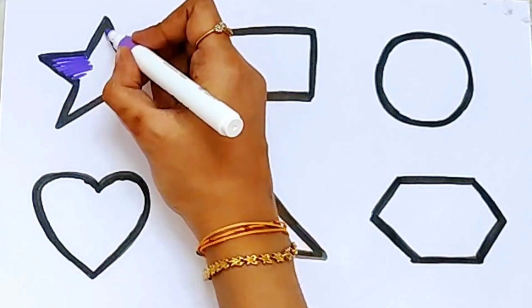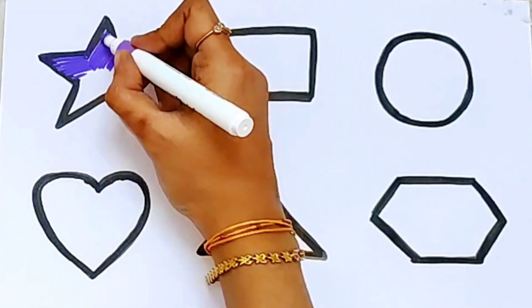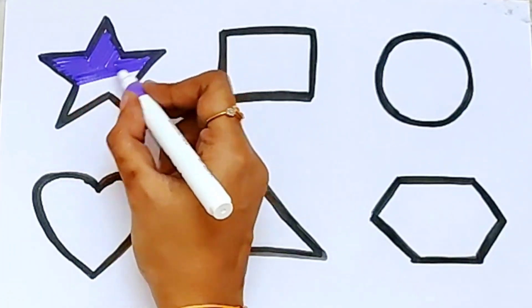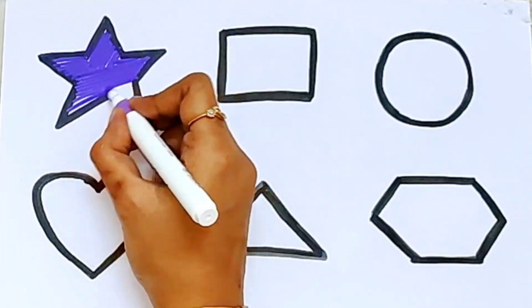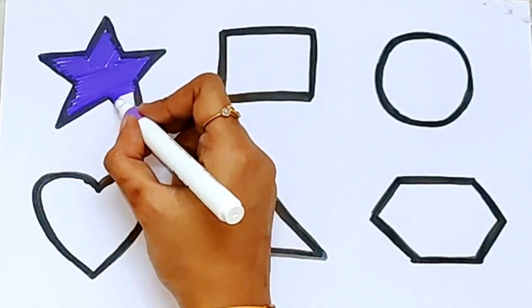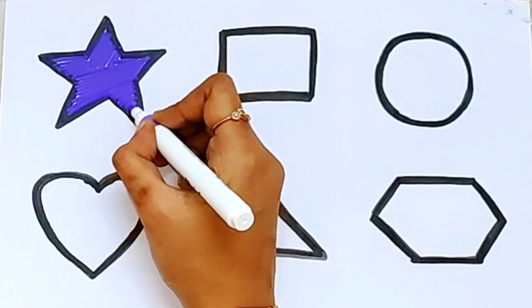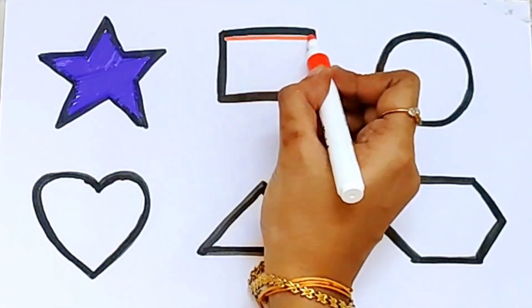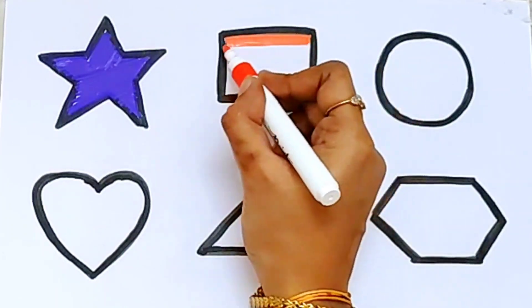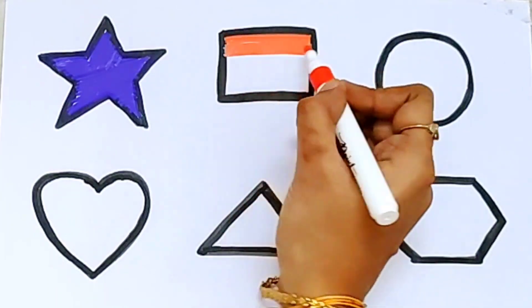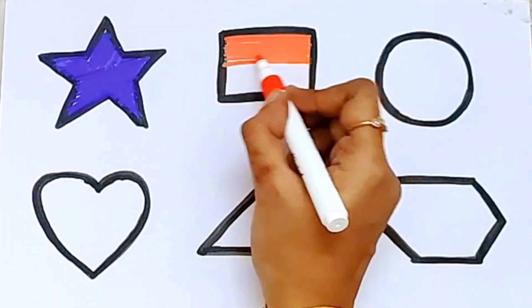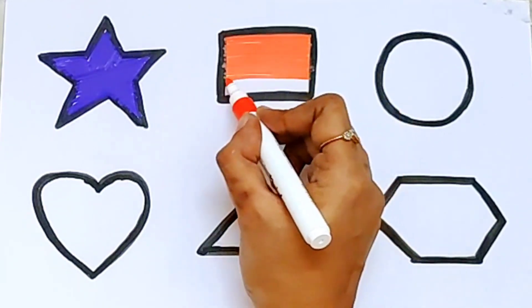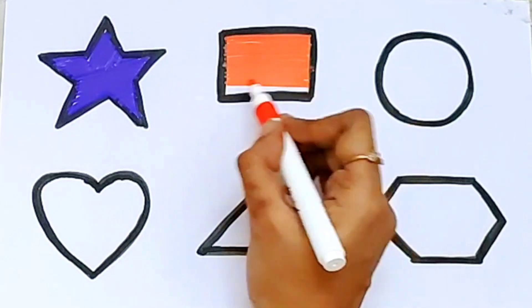Let's color them. Purple color. This is a star. This is a purple star. This is orange color. This is orange square.